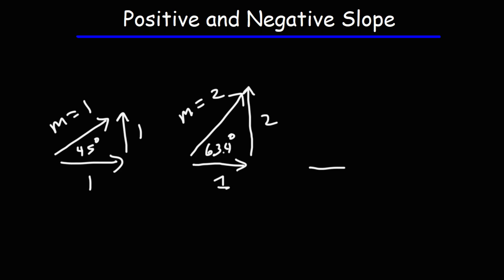If we travel one unit to the right and if we go up three units, we're going to have a slope of 3. Arc tangent of 3 over 1 gives us an angle of 71.6 degrees.